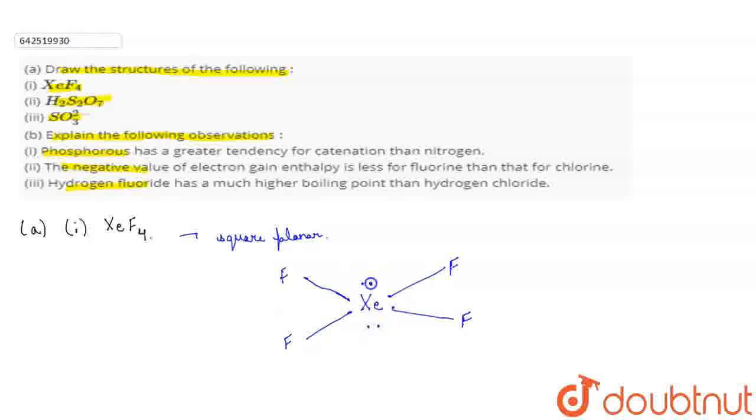And there are two lone pairs. So these are two lone pairs. Thus, we have octahedral electron pair geometry. Octahedral electron pair geometry. And square planar molecular geometry.